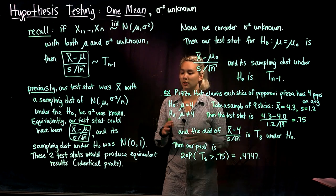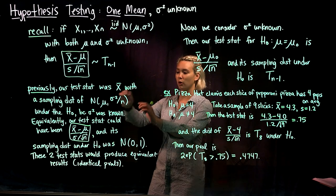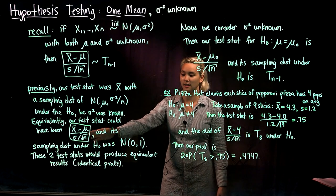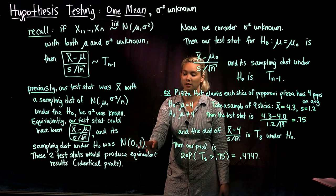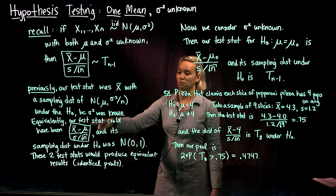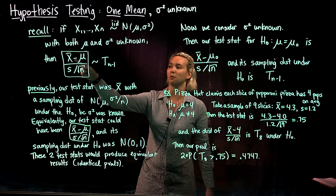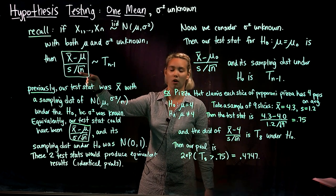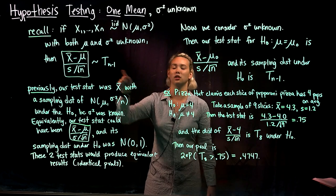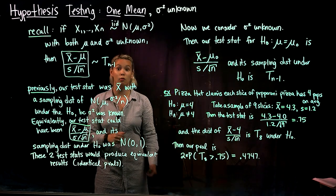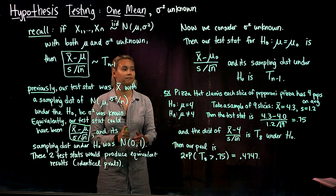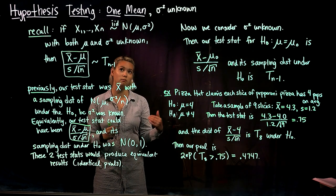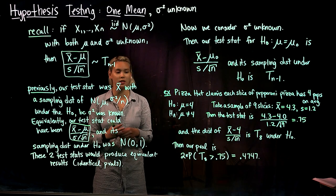Before, we had a test statistic of x bar minus mu over sigma over root n, and its sampling distribution was a standard normal. Now, when sigma squared is unknown, we use x bar minus mu under the null divided by the sample standard deviation over root n, and that has a t distribution under the null hypothesis with n minus 1 degrees of freedom. Let's go ahead and do a hypothesis testing example where both mu and sigma squared are unknown.